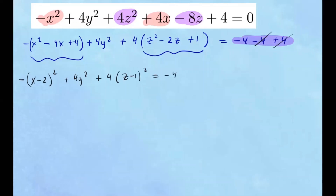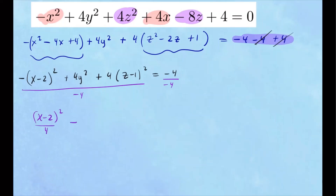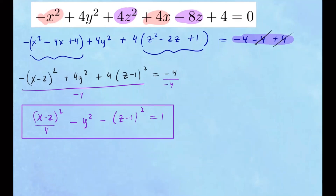We want to turn this into a positive number, so we divide both sides by negative 4. The x variable becomes (x minus 2) squared over 4. The y variable will be negative — 4 over 4 cancels, so you just get negative y squared. And z will also be negative: negative 4 cancels, giving negative (z minus 1) squared equals 1. That is the standard form. Since this equation contains two negative signs, this is a hyperboloid of two sheets.